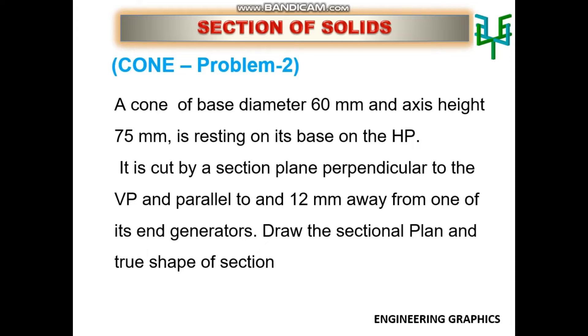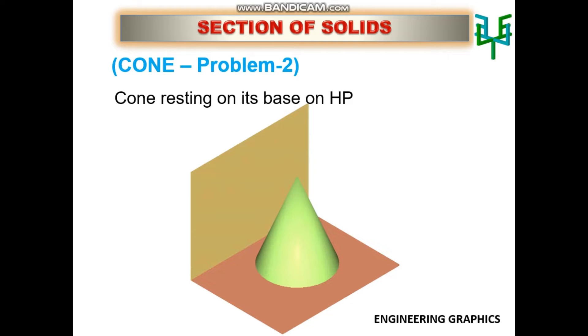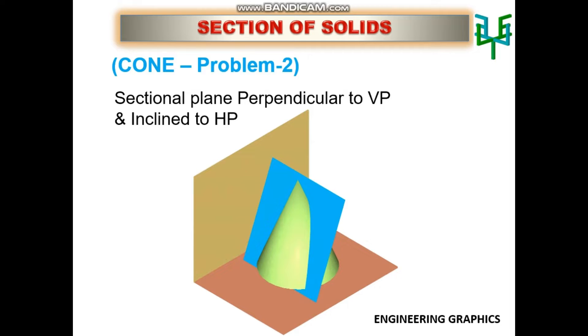Cone standing or resting on the ground with its base. Cone is cut by a sectional plane. The plane is perpendicular to VP and parallel to the generator. The top portion of the cone is removed after sectioning.